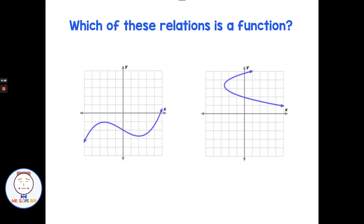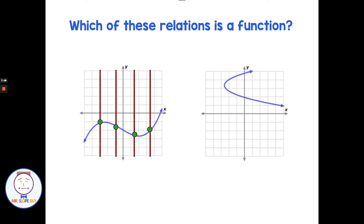We have a couple more figures. The figure on the left — if I draw vertical lines straight up and down, no matter where I draw the line, it only crosses once. So is that a function or not? If it only crosses through once, that means I don't have any x's repeating — that would be a function. Now if there's any place I could draw a line and it crosses twice, then it is not a function. So this one fails the vertical line test — not a function.